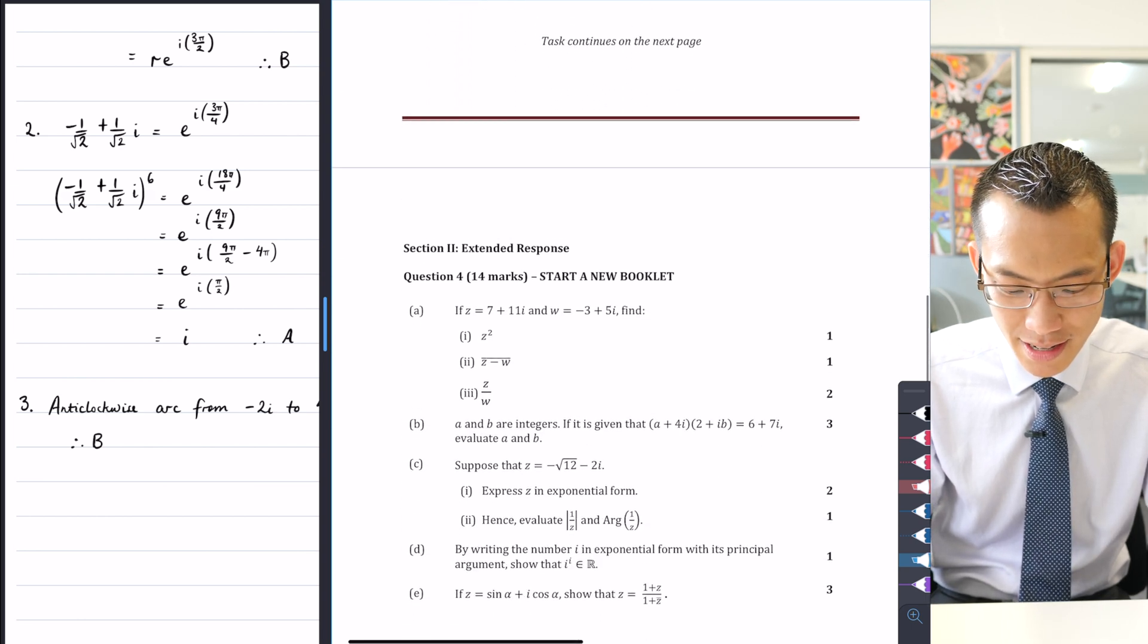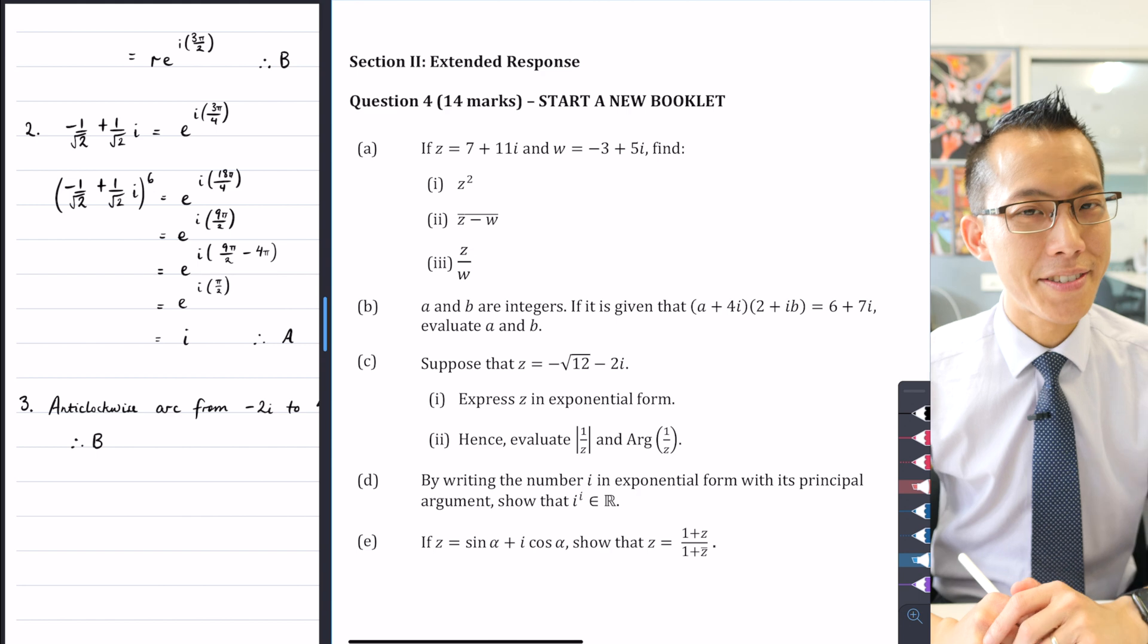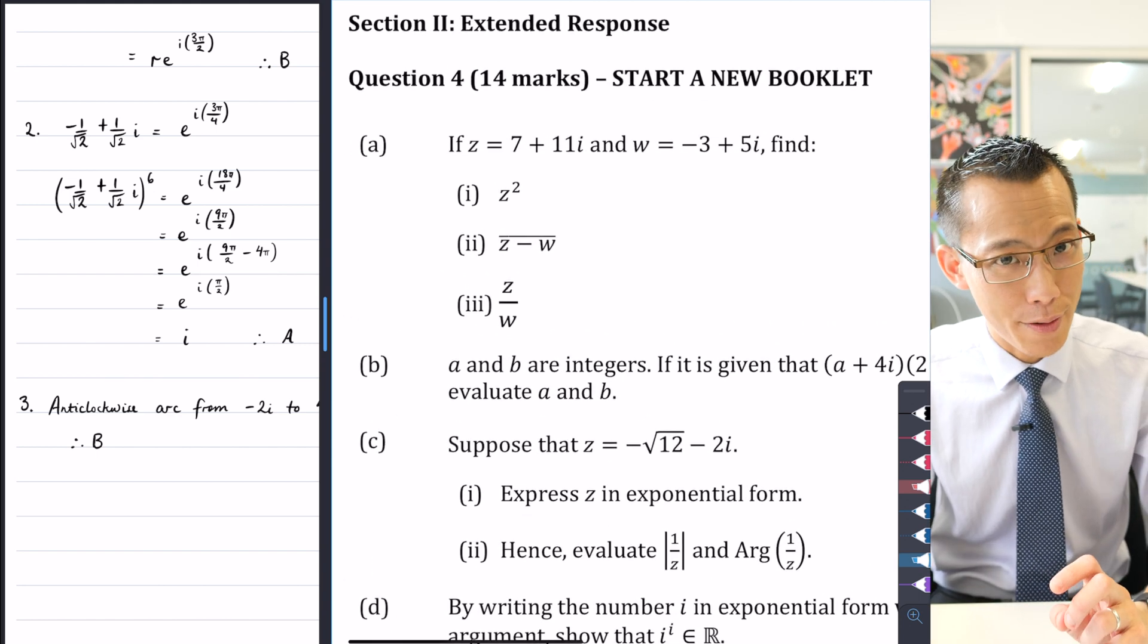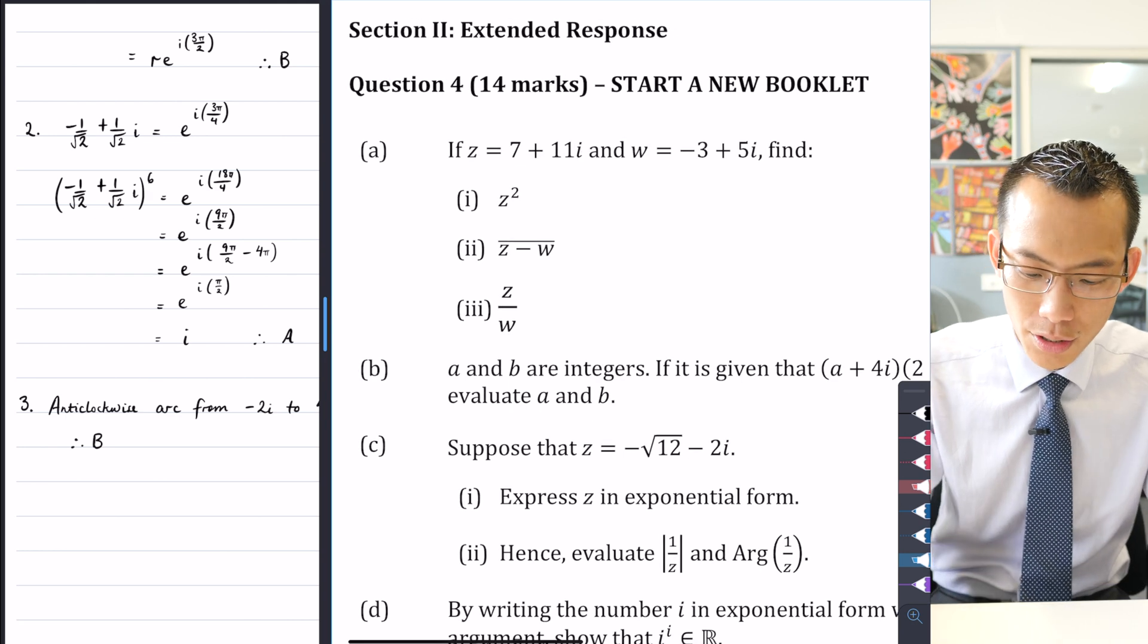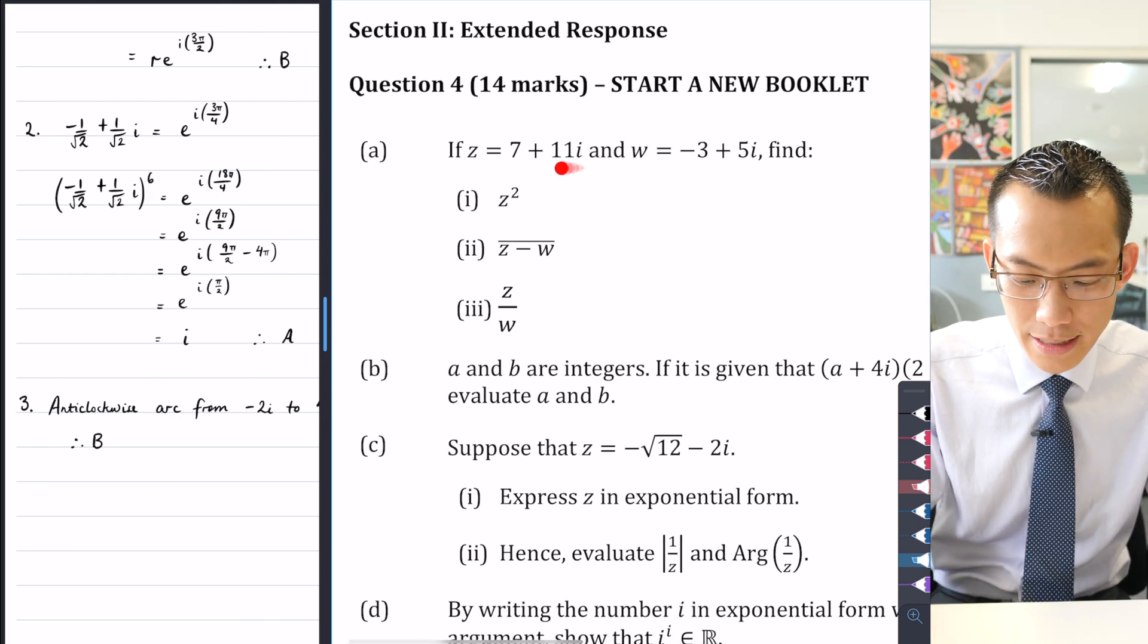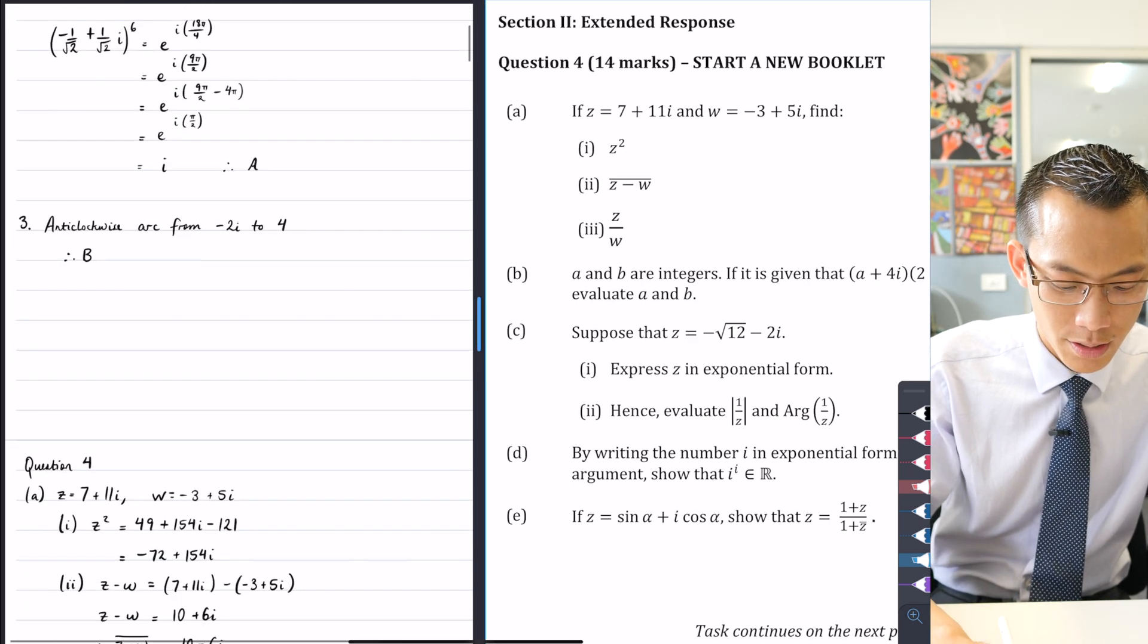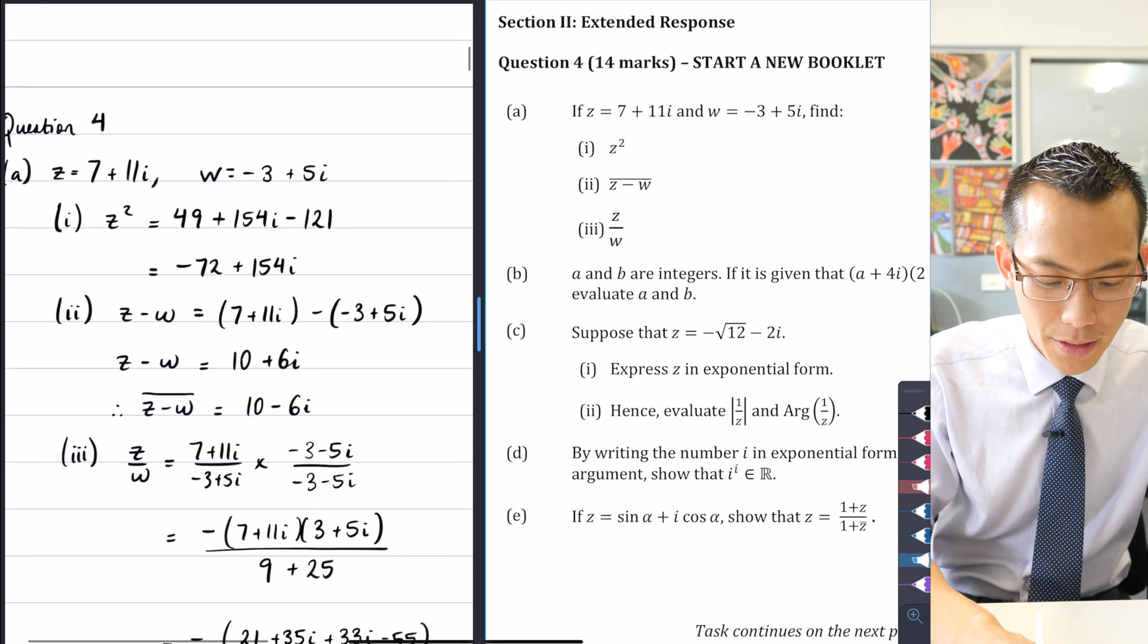4a starts with some warm-up stuff here, to be honest, just some simple straightforward complex number arithmetic. So we define for you a particular z and a particular w. How do we square it? I won't go into too much detail on this one because I think you'll be okay handling it.